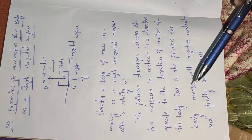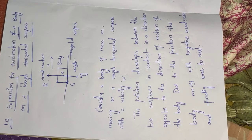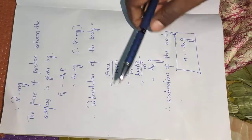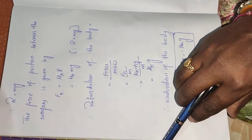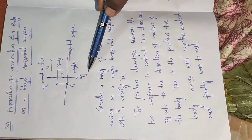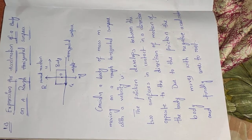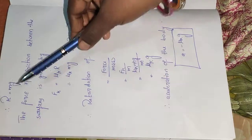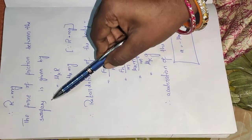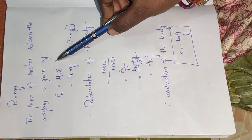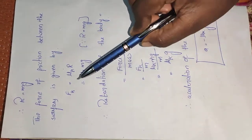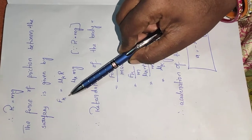So what is the acceleration derivation? From the problem diagram, R equal to MG — that is the normal reaction formula. The force of friction between the surfaces is given by the kinetic friction formula, since the body is moving.